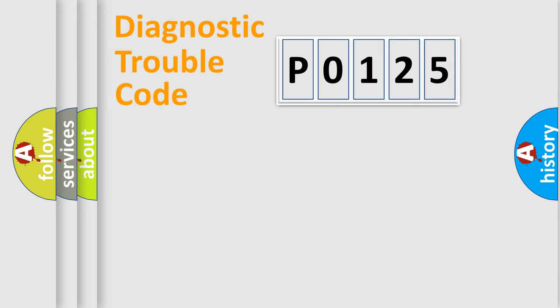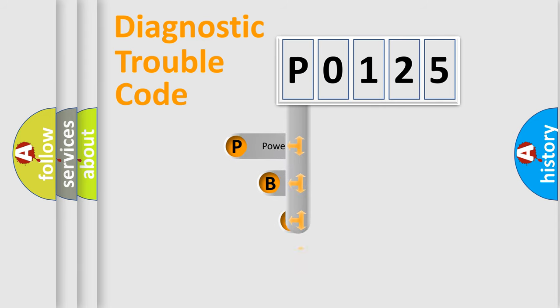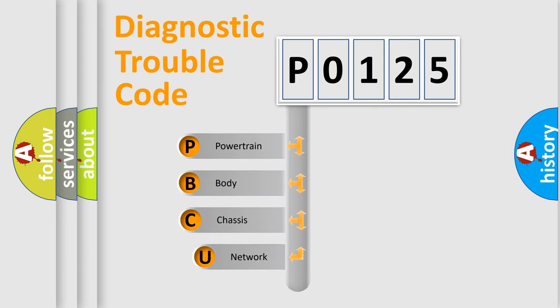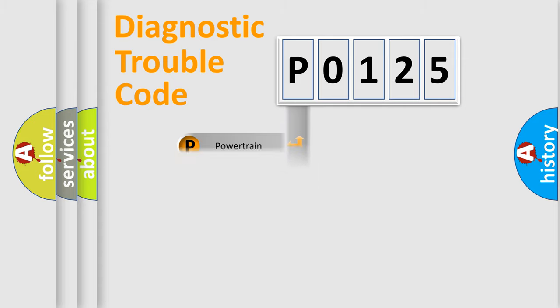Let's look at the history of diagnostic fault code composition according to the OBD2 protocol, which is unified for all automakers since 2000. We divide the electric system of an automobile into four basic units: Powertrain, Body, Chassis, and Network. This distribution is defined in the first character of the code.